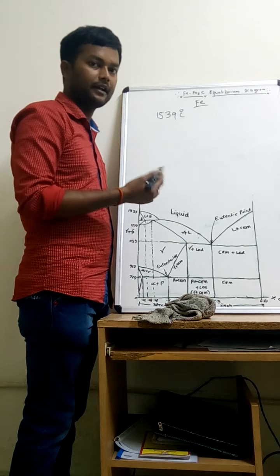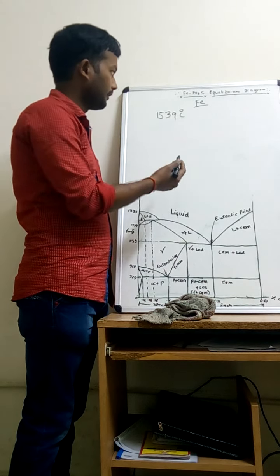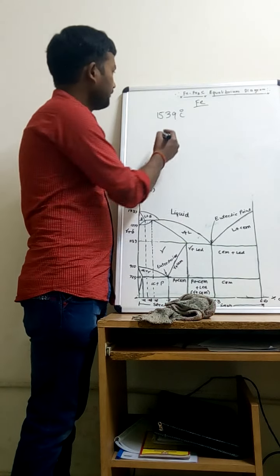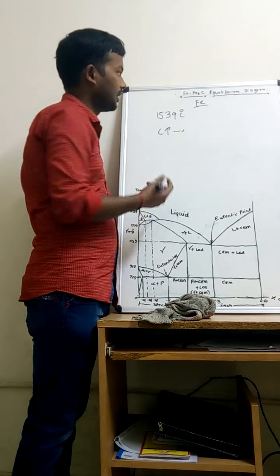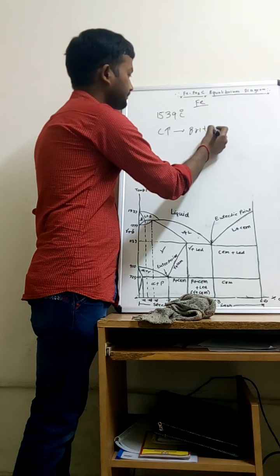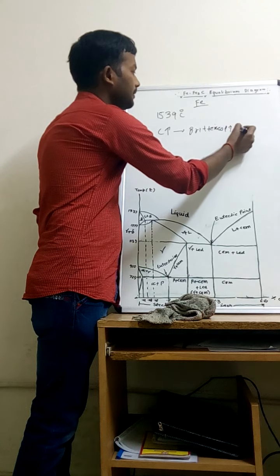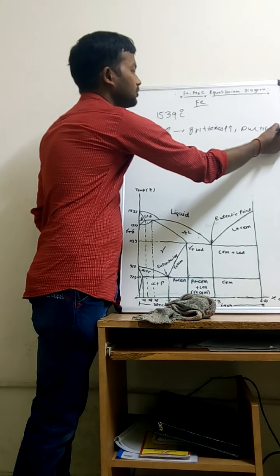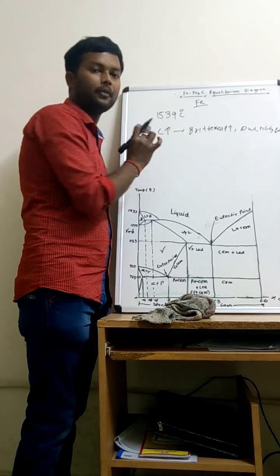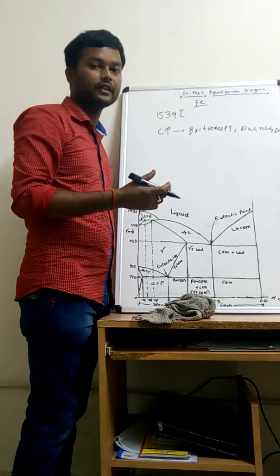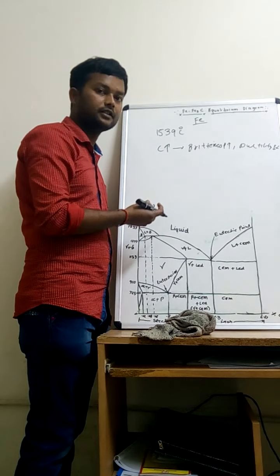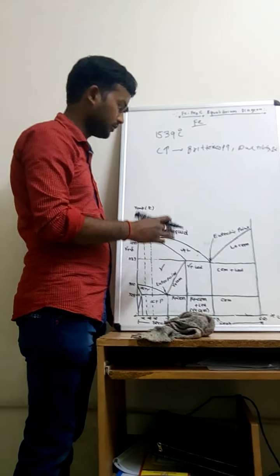Before explaining iron and steel, I want to explain the property of carbon, which is widely used in further application. If we increase the percentage of carbon in iron, the percentage of carbon will increase, so brittleness will increase and ductility will be reduced. Ductility will be reduced, so the material will be very soft. This is a very important property — we can directly tell which material is more ductile or which is more brittle, which is a common exam question.